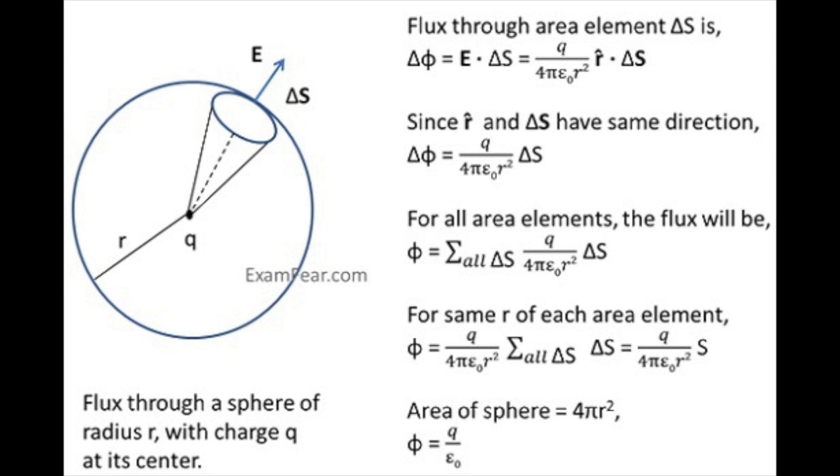What is Gauss's law? The total electric flux out of a closed surface equals the charge enclosed divided by the permittivity. Flux electric is φ = q/ε₀. This is basically Gauss's law.